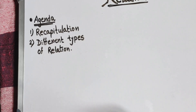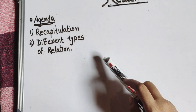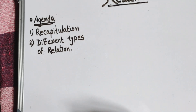Welcome to Flawless Mathematics. I will start a new chapter on relations with a lot of interesting content. Today's agenda is: number one, recapitulation, and number two, different types of relations. Let's start.